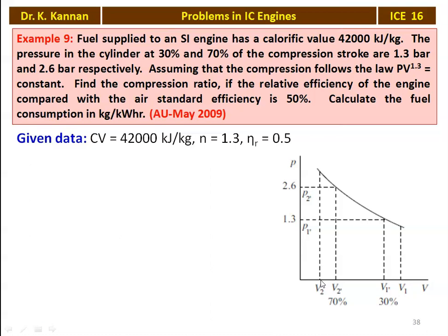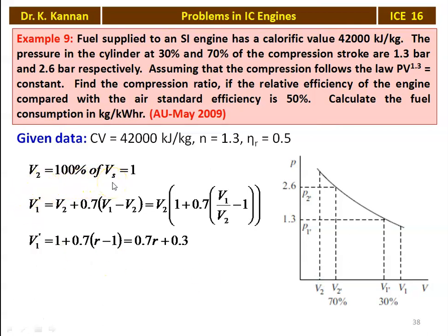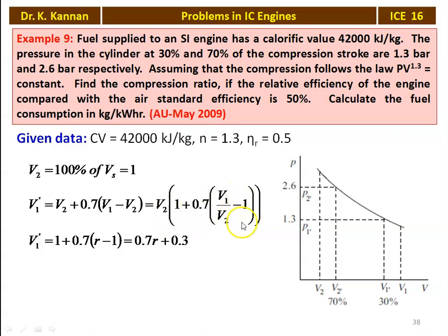V2 equals 100 percent of the stroke volume, considered as 1. V1-dash is measured from V2, so V2 plus the length between V2 and V1-dash equals 0.7 times of (V1 minus V2). Taking V2 outside: V2 into (1 + 0.7 × (V1/V2 − 1)). Since V2 = 1 and V1/V2 = R, V1-dash = 1 + 0.7(R − 1) = 0.7R + 0.3.